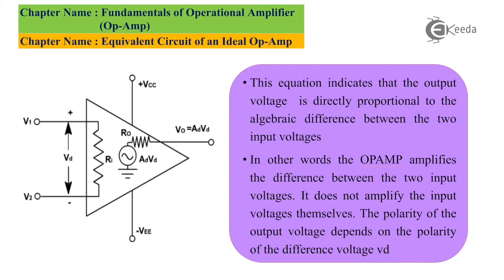As two inputs are applied to the input terminal of the op-amp, therefore the op-amp is double-ended, and only a single output is taken, therefore the output is single-ended. The equation indicates that the op-amp can amplify the algebraic difference between the two input signals, and therefore it is also called as a differential amplifier.